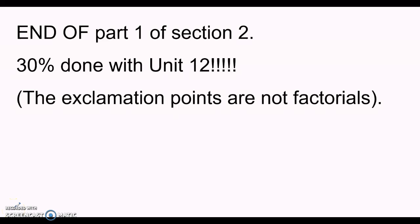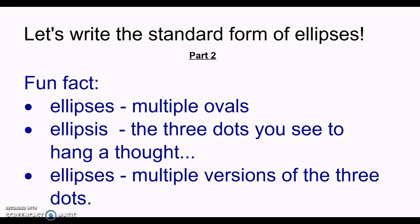This video is going to be for section 2 of part 2 in unit 12. What we're going to be writing here is the standard form of the ellipse when we're given the general equation of an ellipse. But the first thing that we need to do is, when we're given the general equation of the ellipse, how do we identify from that equation if we actually have an oval, an ellipse?